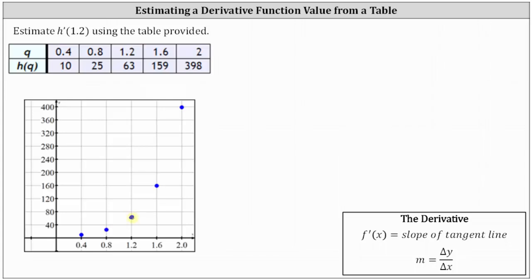Since we're told to use a table to approximate the slope of the tangent line, what we'll do is find the slope of the secant line on the left side, which will be the slope of the secant line passing through these two points. Then we'll find the slope of the secant line on the right, passing through these two points. Then we'll average these two slopes to approximate the slope of the tangent line, which would be approximately the slope of this blue line here, giving us our estimate for h prime of 1.2.